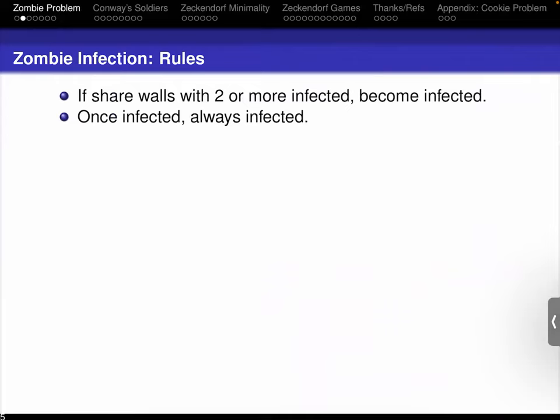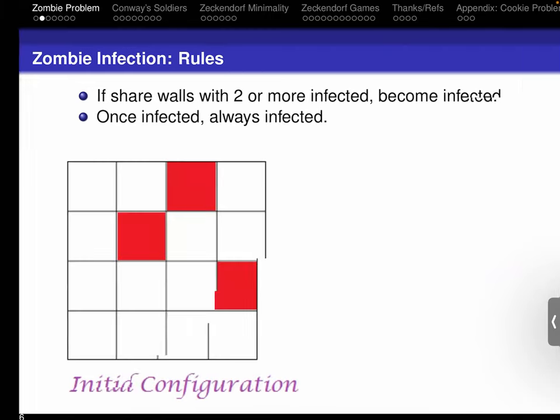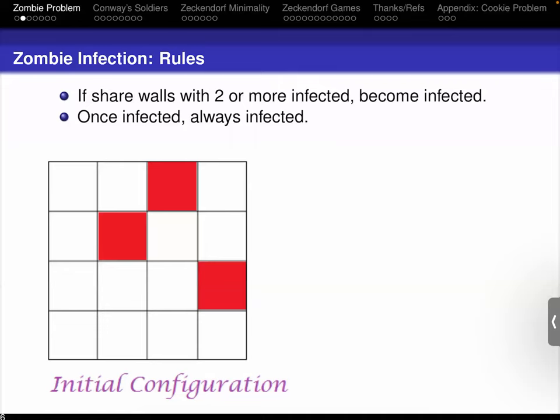Has anybody here never seen a zombie movie or is unaware of what zombies are? There are a lot of different variants of zombies. The version I will use is: once a zombie, always a zombie — there's unfortunately no cure. We're going to use a square checkerboard, and if you share two walls with zombies, you become a zombie. Once you're infected, you're always infected. In this initial configuration, it shouldn't be too hard to figure out who gets infected next.